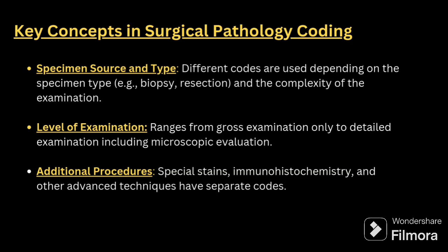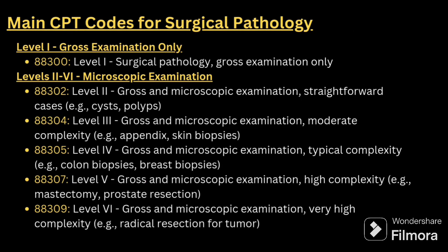The key concepts you have to understand: first is specimen source and type. Different codes are used based on the specimen type, like biopsy, resection, and complexity of the examination. Level of examination should be maintained, and additional procedures like special stains and immunohistochemistry must also be clearly understood.